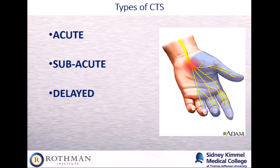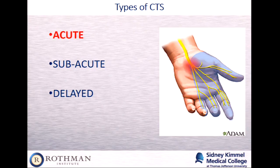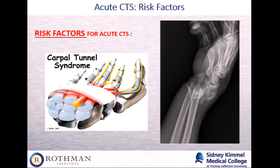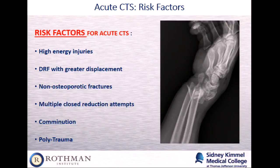Acute means the symptoms of carpal tunnel syndrome began immediately following or soon after the fracture itself. Subacute means symptoms started days to weeks following the fracture. Delayed means it started technically 6 to 12 months after the fracture. We're going to focus on acute because that's where we have to make more decision-making on the front end — how to proceed, how to manage the fracture, as well as the issue of nerve compression.